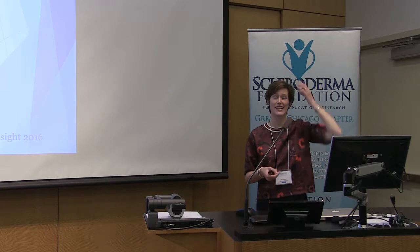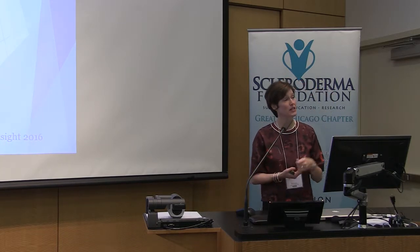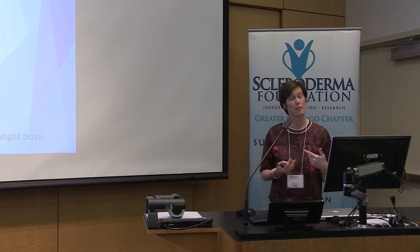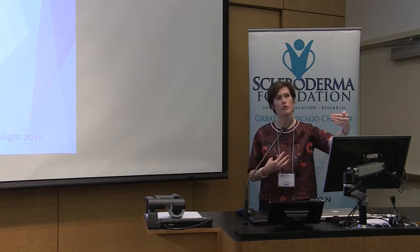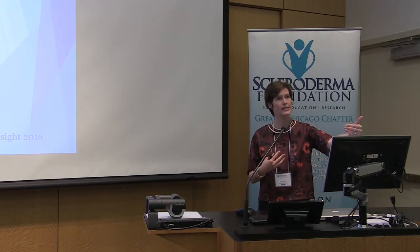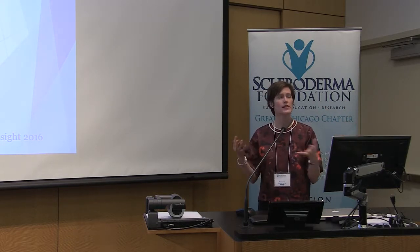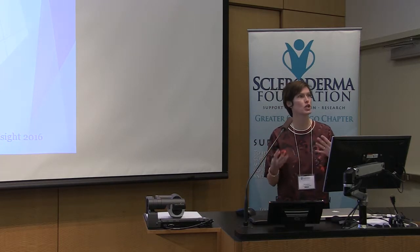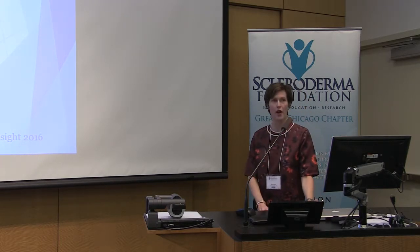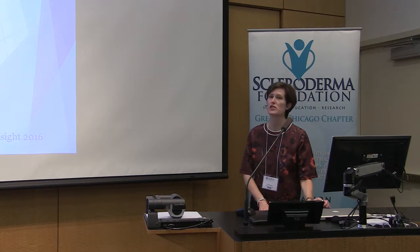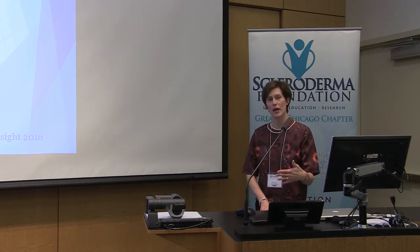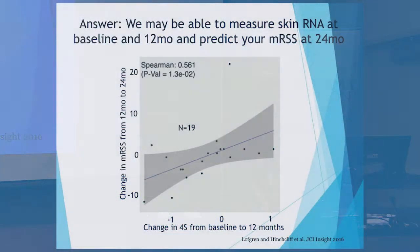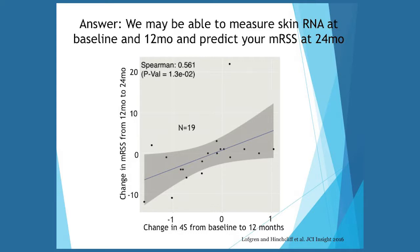This is the first time we were able to find a biomarker that could predict what your skin score would be. Before that, antibodies helped somewhat — patients with RNA polymerase 3 positivity have much greater risk of bad skin disease — but it was always nebulous. This is the first scientific study showing that measuring the change in gene expression could predict your skin score at 24 months. This was published in a journal in 2016.